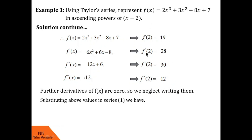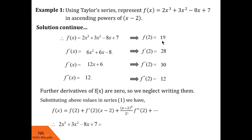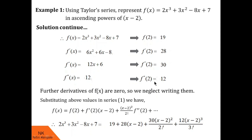Now substituting these values into equation 1, f(x) = 19 + 28(x - 2) + (x - 2)²/2! · 30 + (x - 2)³/3! · 12. Further terms are 0. This is the Taylor series of f(x) about x = 2, or equivalently the representation of f(x) in ascending powers of x - 2.